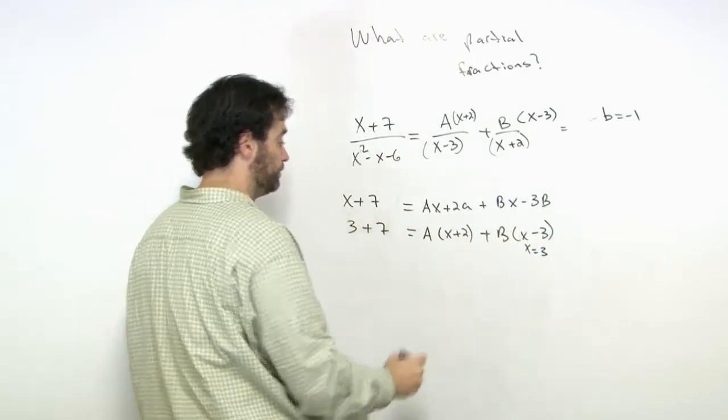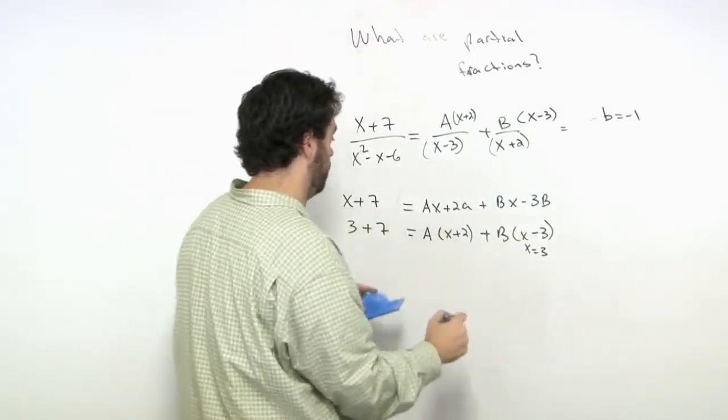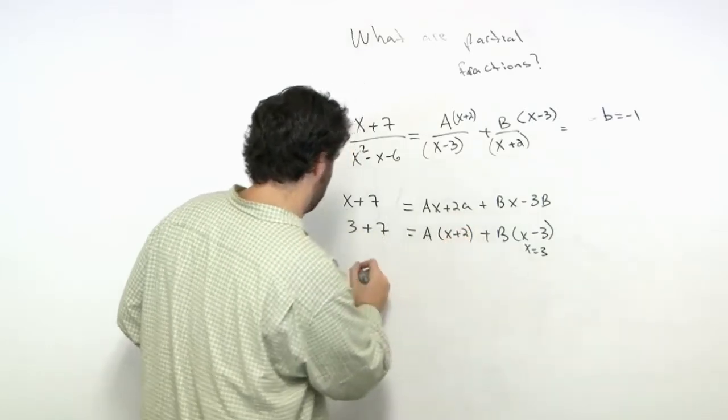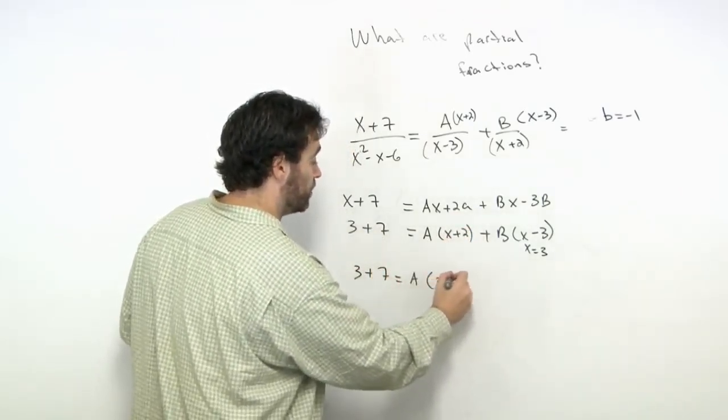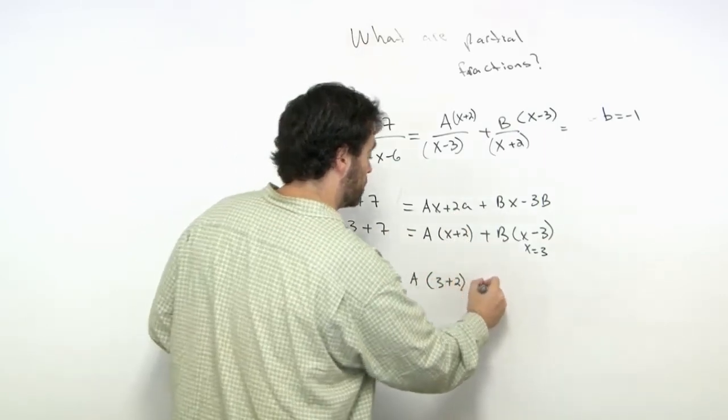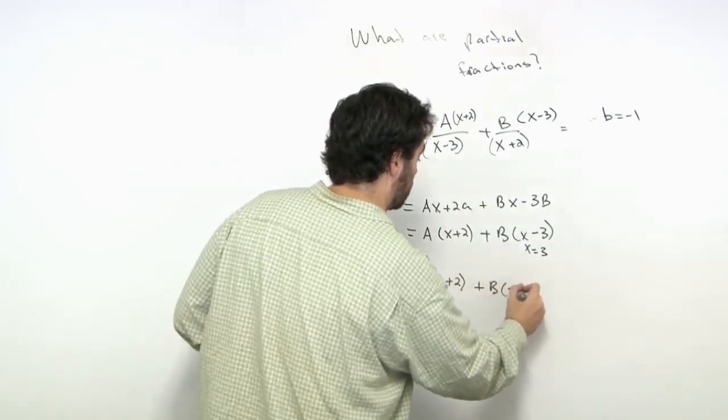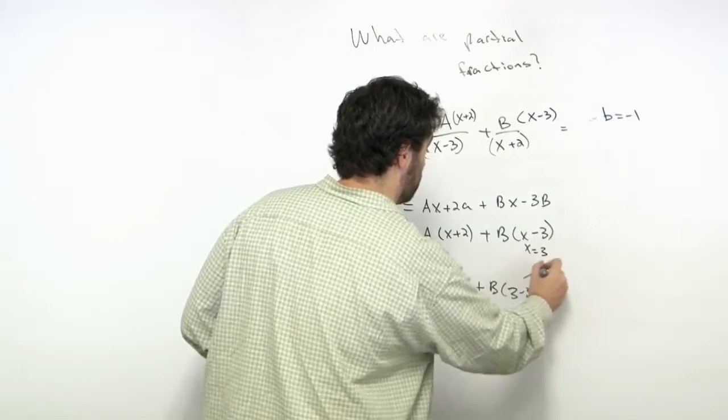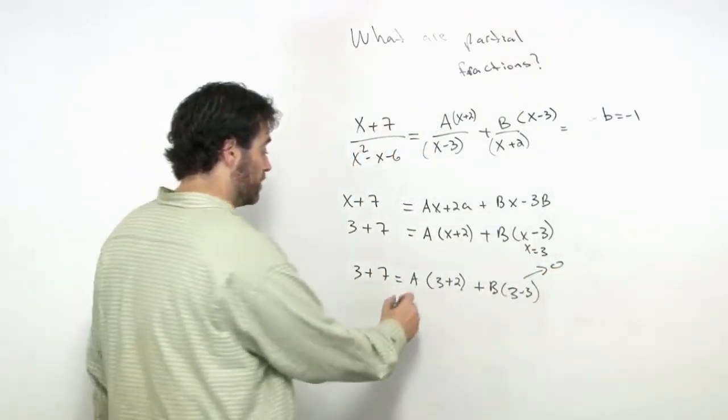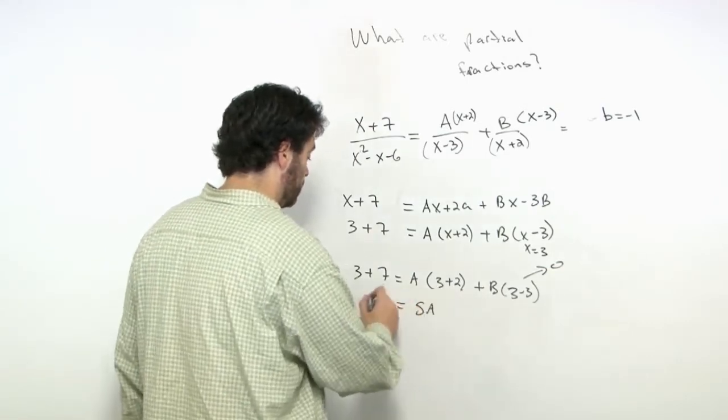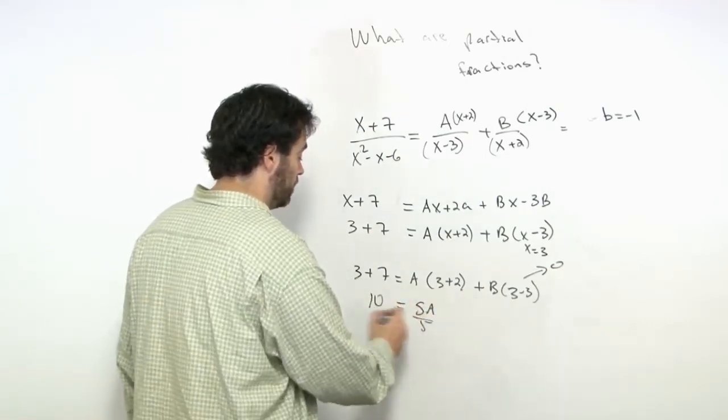We get 3 + 7 = A(3 + 2) + B(3 - 3). The second term goes to zero. So 10 = 5A.